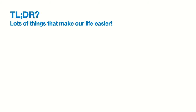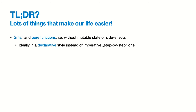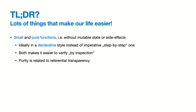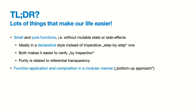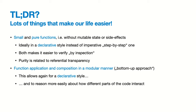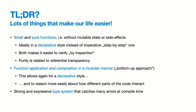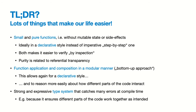The agenda: we'll talk about small, pure functions — pure meaning without side effects, without state — written in a declarative manner, hopefully verifiable by inspection. We'll discuss purity and its relation to referential transparency, how to apply and compose functions into a declarative style for easy reasoning. Then the second chunk will be about the type system, which helps catch many evil things at compile time, reducing runtime errors and ensuring different parts of the code work together as intended.